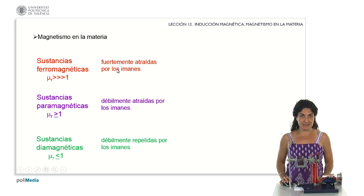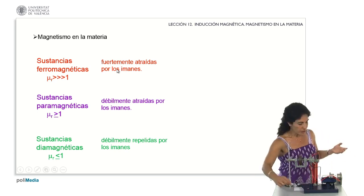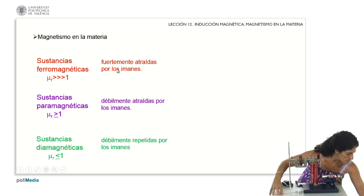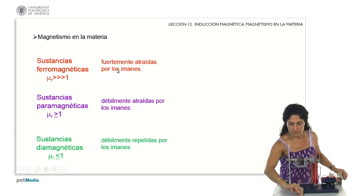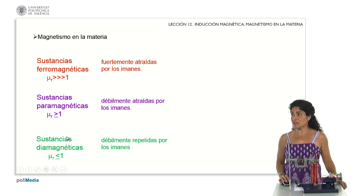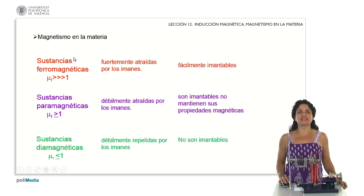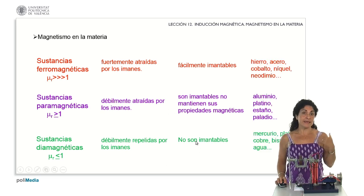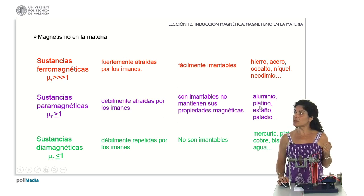The different characteristics we find are: ferromagnetic substances are strongly attracted by magnets, as is the case of iron. Paramagnetic ones are weakly attracted to magnets, and diamagnetic ones are weakly repelled by magnets. Ferromagnetic substances are easily magnetizable materials. Paramagnetic ones are magnetizable but do not maintain their magnetic properties when the interaction with the magnetic field ceases. Diamagnetic ones are not magnetizable at all. Examples: ferromagnetic — iron, steel, cobalt; paramagnetic — aluminum, platinum, tin, palladium; diamagnetic — mercury, silver, copper.